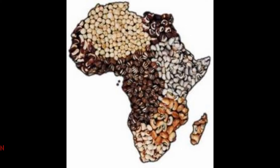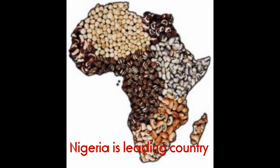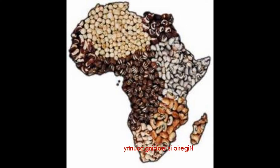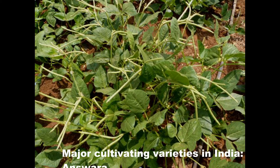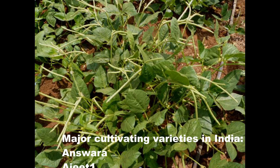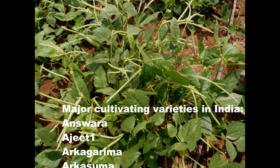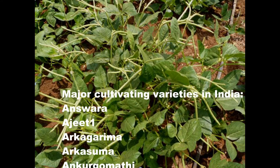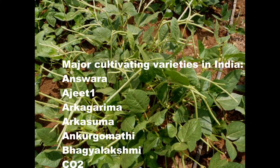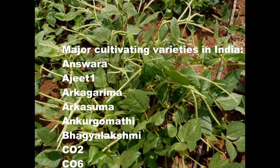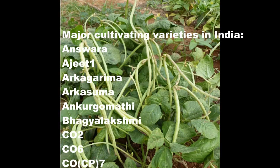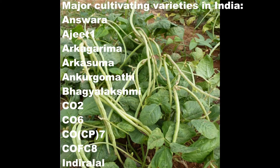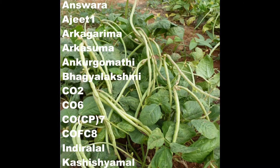Nigeria is the largest producer of cowpea, producing 2.2 million metric tons per year. Major cultivating varieties in India include Answara, Azit 1, Arka Garima, Arka Suma, Ankur Komadi, and Bakayalashmi.